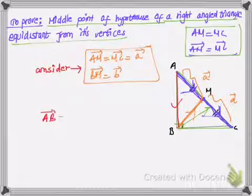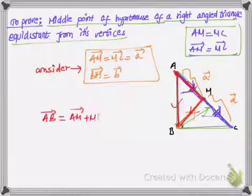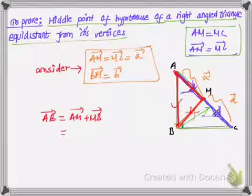Now let us take the vector AB. So we know that vector AB, moving from point A to B, is the same as moving from point A to M and then M to B. So for AB vector, I can write AM vector plus MB vector.